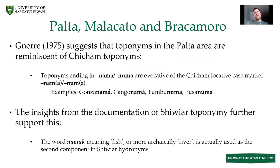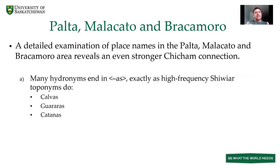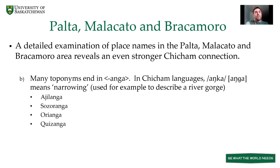In 1975, Mauricio Nierre also suggested that toponyms in the Palta area are reminiscent of Chicham toponyms because they end in -Nama or -Numa, evocative of the Chicham locative case marker — for example Gonsanama, Tumbunuma, Pusanuma. Now, looking at the Chibiad toponymy documentation, we know that Nama — meaning 'fish' in modern Chibiad but 'river' in some other Chicham languages — is actually used in Chibiad hydronyms. Going further, if we look at place names in the Palta, Malacato, and Bracamoro areas in the cartography project, many hydronyms end in -as, exactly like the high-frequency Chibiad toponyms: Calvas, Guararas, Katanas — just like Pupunas and Canoas in Chibiad. Many toponyms also end in -Anga.